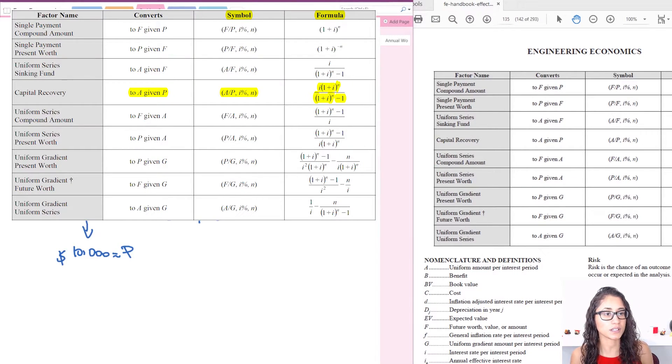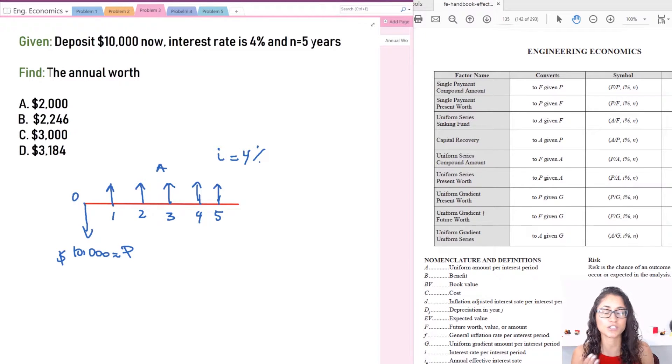So like I said in the previous video, we have two equations and they're pretty much the same thing, except if the interest rate that's given to you is on the tables, then use this because it's going to be way faster than calculating. This might take you a little bit of time and you don't have that kind of time during the FE exam.